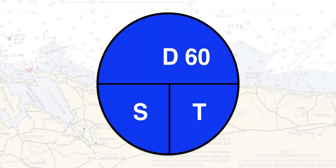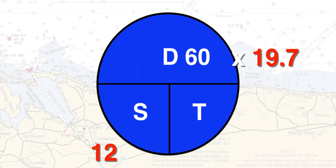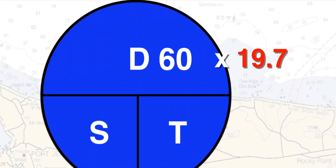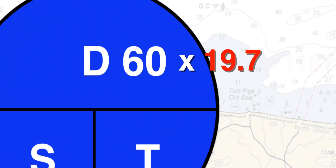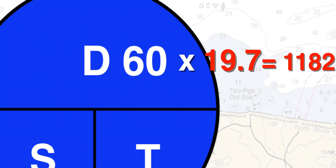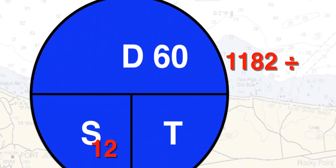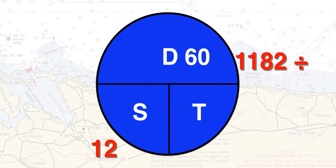Let me show you an example of using 60 D Street to figure out time underway if our distance is 19.7 nautical miles and we're traveling at a speed of 12 knots. Following rule one, you first multiply the two numbers that are side by side, which in this case are 60 and 19.7. This gives you an answer of 1182. Immediately apply rule two and divide 1182 by 12 knots.